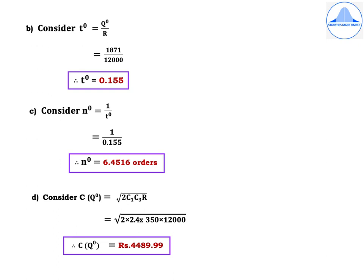The minimum average cost: C(Q⁰) = √(2C₁C₃R) = √(2 × 2.4 × 350 × 12,000) = Rs.4489.99.